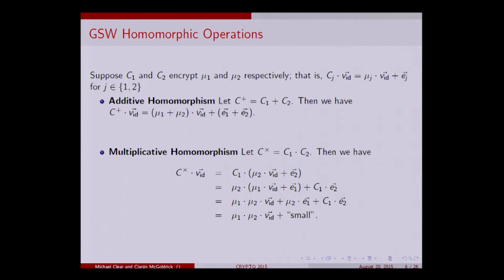It's a nice simple scheme with interesting properties. Additive homomorphism is straightforward — you simply add the two matrices and get the encryption of their sum. Multiplicative homomorphism is similarly straightforward.